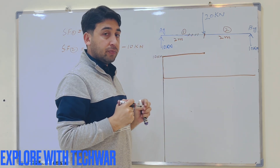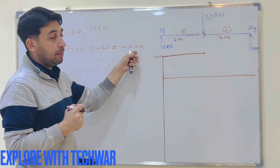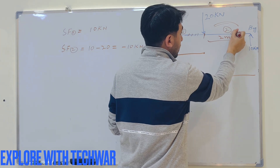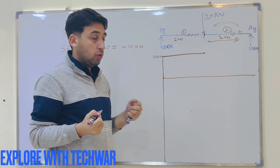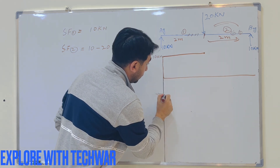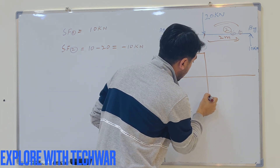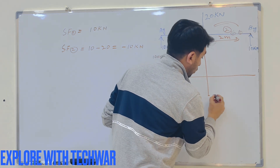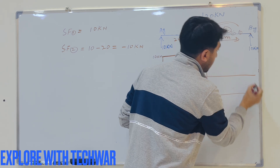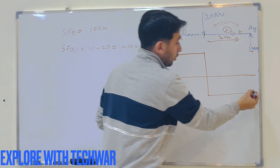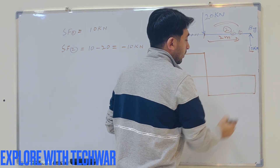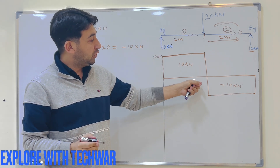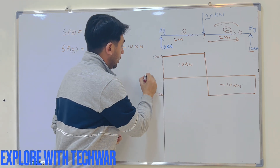On the right side of the 20 kN force, in region 2, the shear force is -10 kN everywhere. So from the midpoint we drop to -10 kN and this value continues to the end of the beam. At the very end, adding the reaction of +10 kN brings the value back to zero. So the shear force diagram shows +10 kN on the left half and -10 kN on the right half.